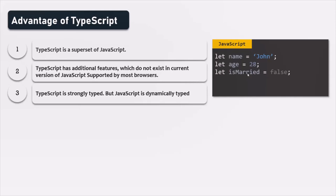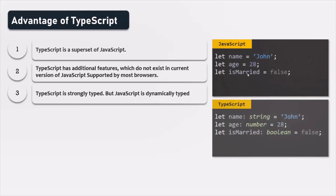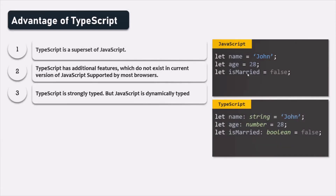TypeScript, on the other hand, is strongly typed. In TypeScript, we can explicitly specify what type of data we want to store in a variable. For example, for the name variable, we specify the data type as string, so we can only store string values in it. If we try to store a number value in that name variable, it will throw an error. But that is not the case in JavaScript — in JavaScript, you can assign a string value to a variable and later assign a numeric value to the same variable, and it will not complain. Since TypeScript is strongly typed, it helps us avoid many bugs in our application which can be introduced due to dynamic typing.